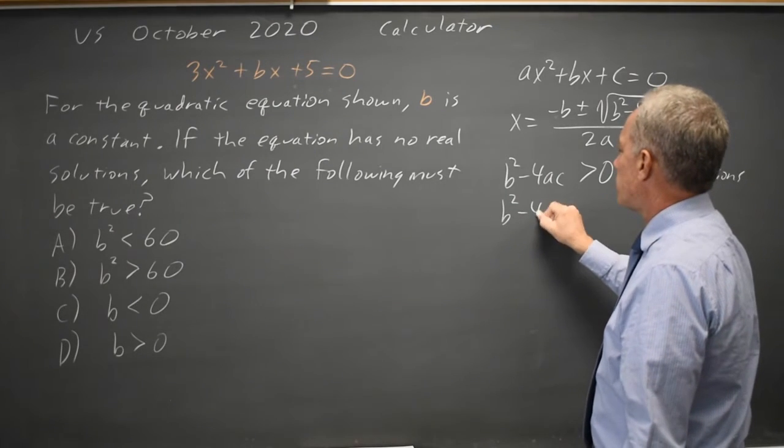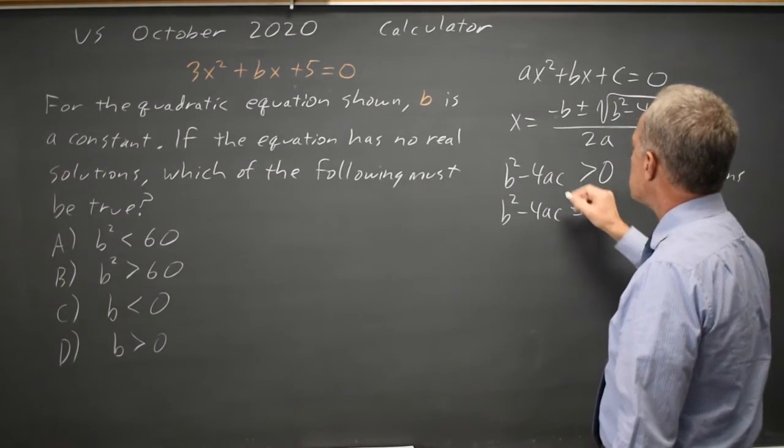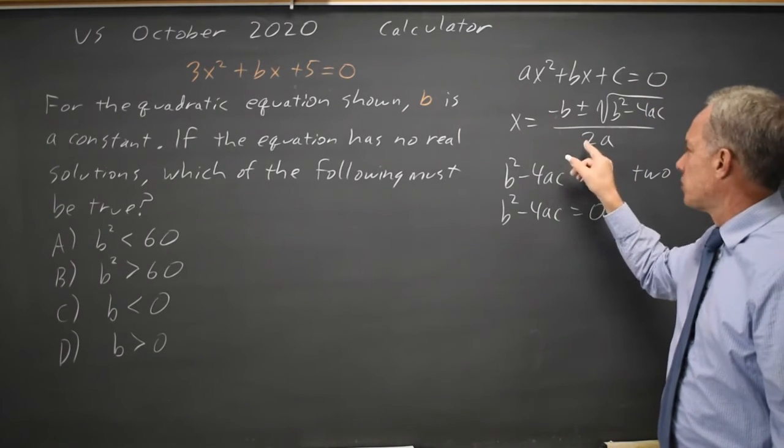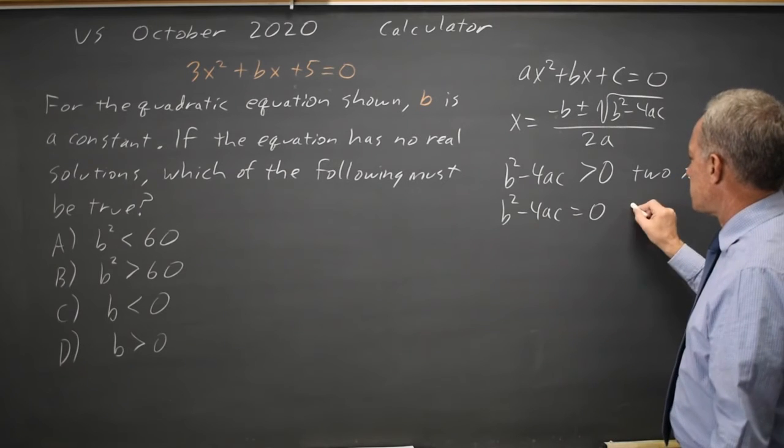If B squared minus 4ac is equal to zero, then we get negative B plus zero and negative B minus zero, both over 2a. And those are the same things, so you only have one solution.